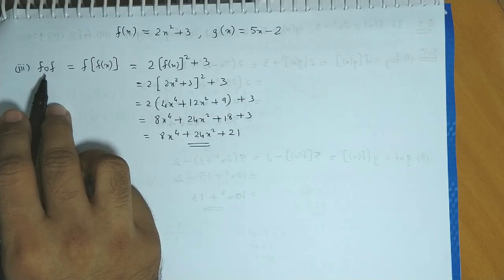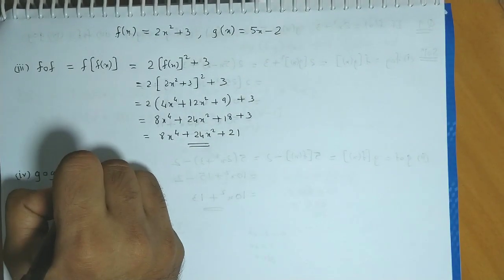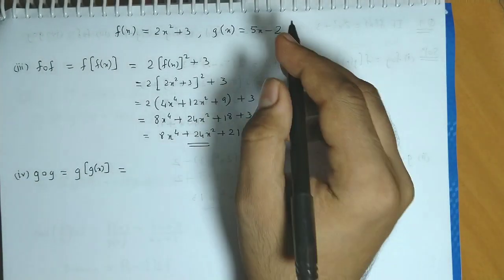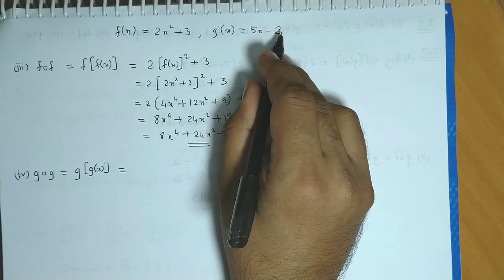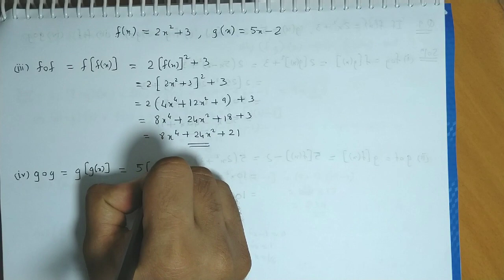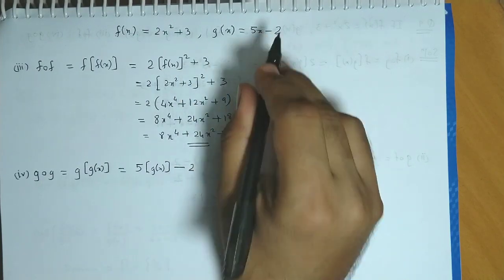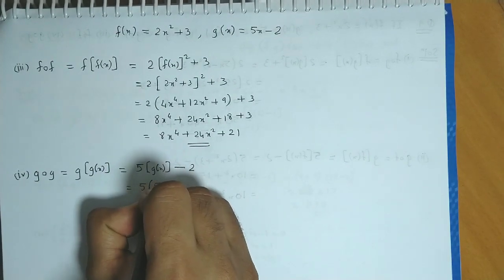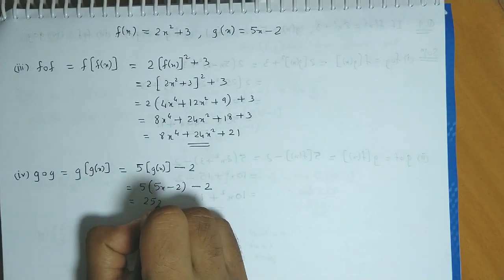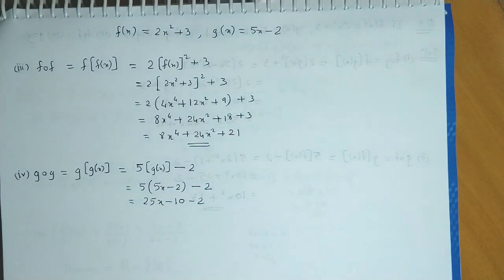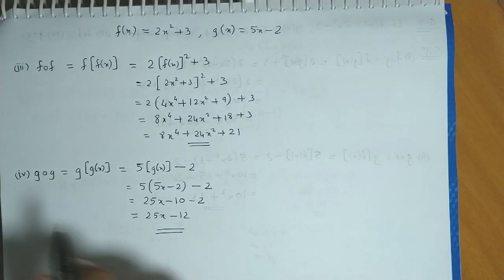Finally, gog is a composite function where we substitute g(x) into g. Wherever x appears in g, we write g(x). So g(g(x)) = 5 × g(x) - 2 = 5(5x - 2) - 2 = 25x - 10 - 2 = 25x - 12. This is the value of the gog function.